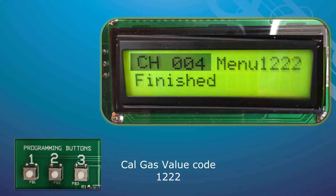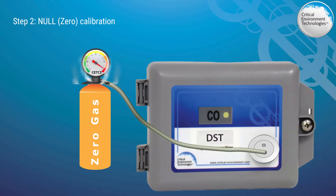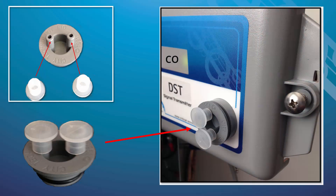The null or zero calibration is done to each DST. Attach the regulator to the cylinder, insert the calibration adapter into the DST sensor opening in the front of the enclosure door, and open the regulator valve fully, allowing the zero gas to flow over the sensor for 2 to 3 minutes. If you don't have zero gas, you can use the calibration plug provided in your calibration kit to close both sensor vents. If you use the plug instead of zero gas, you will have to wait approximately 5 minutes before performing the null calibration.